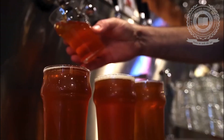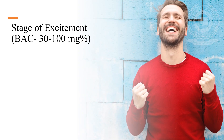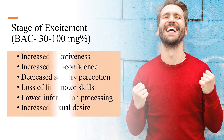Alcohol poisoning can be studied under three stages. The first is the stage of excitement, which occurs when the blood alcohol concentration is 30 to 100 mg per 100 ml. The symptoms include increased talkativeness, increased self-confidence, decreased sensory perception, loss of fine motor skills, slowed information processing and increased sexual desire.